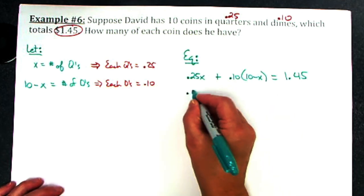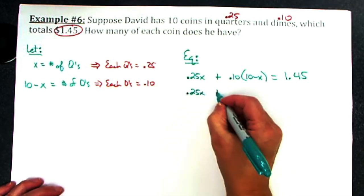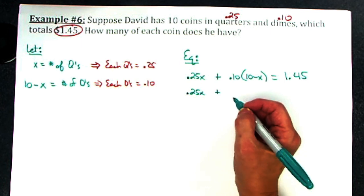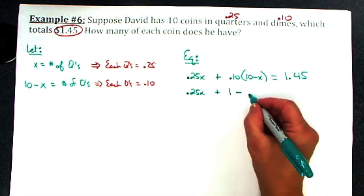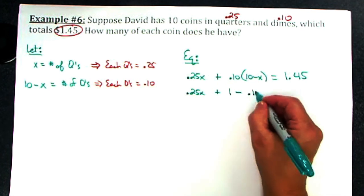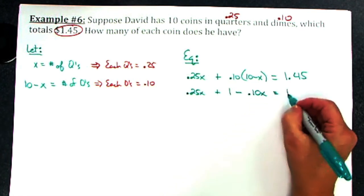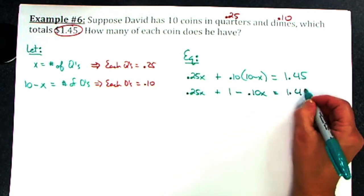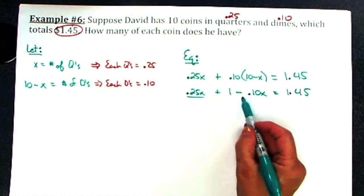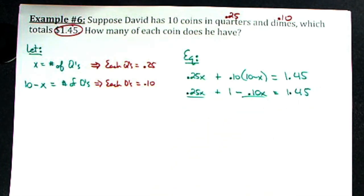Let's leave 0.25x. 0.10 times 10 is just going to be a 1, minus a 0.10x. Combine some like terms here: 0.25 minus 0.10 is going to give me 0.15.